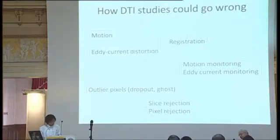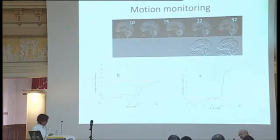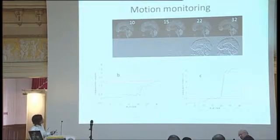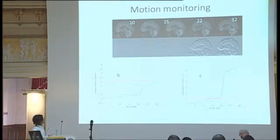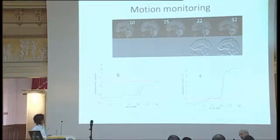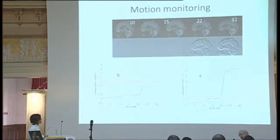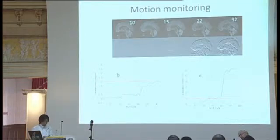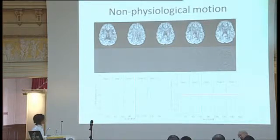Here is a typical case of 32 diffusion orientations — I picked up five of them. This interface shows how the brain moved compared to the data generated from the entire data set. Similar to fMRI studies, it is relatively straightforward to extract the amount of rotation and translation. This is one kind of quality control you would be interested in, and sometimes you can visually see the motion.